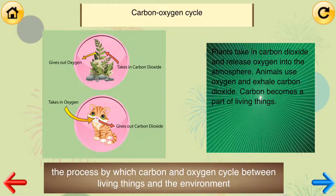Carbon-oxygen cycle. The process by which carbon and oxygen cycle between living things and the environment. Plants take in carbon dioxide and release oxygen into the atmosphere. Animals use oxygen and exhale carbon dioxide. Carbon becomes a part of living things.